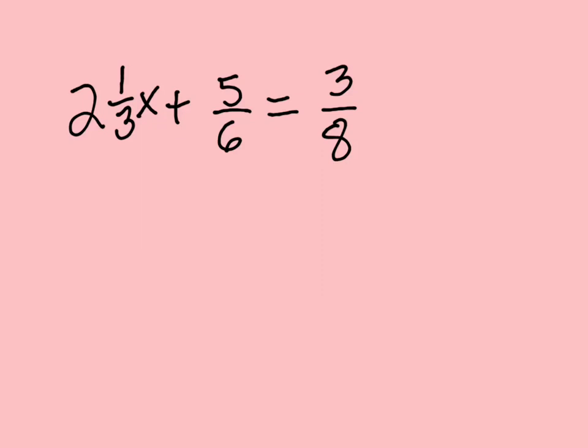First thing we want to do is make sure all numbers are improper fractions or whole numbers. So 3 times 2 is 6 plus 1 is 7. So this becomes 7/3 x plus 5/6 equals 3/8.